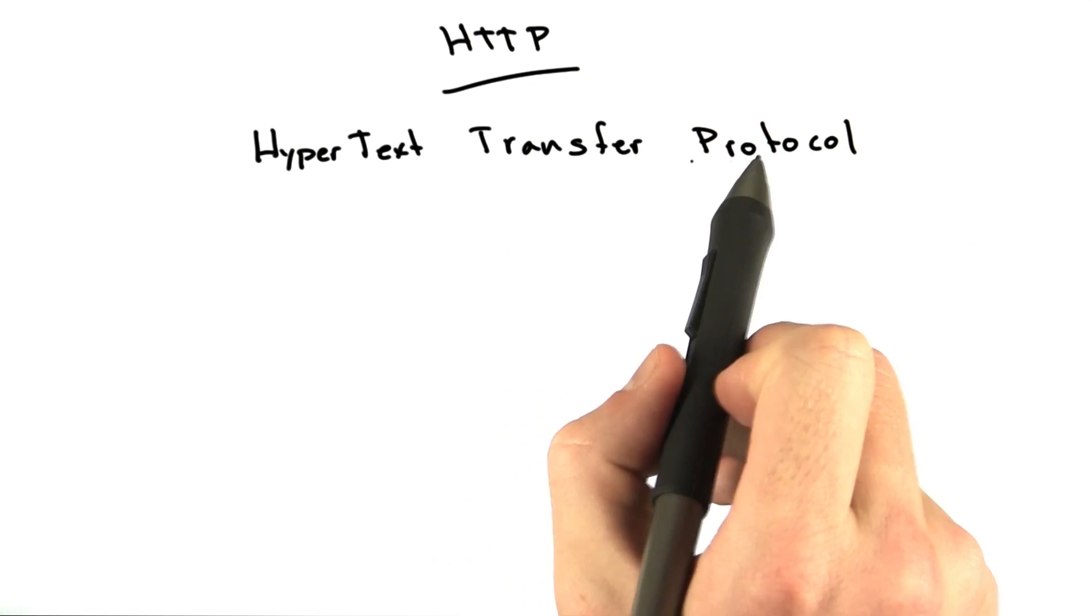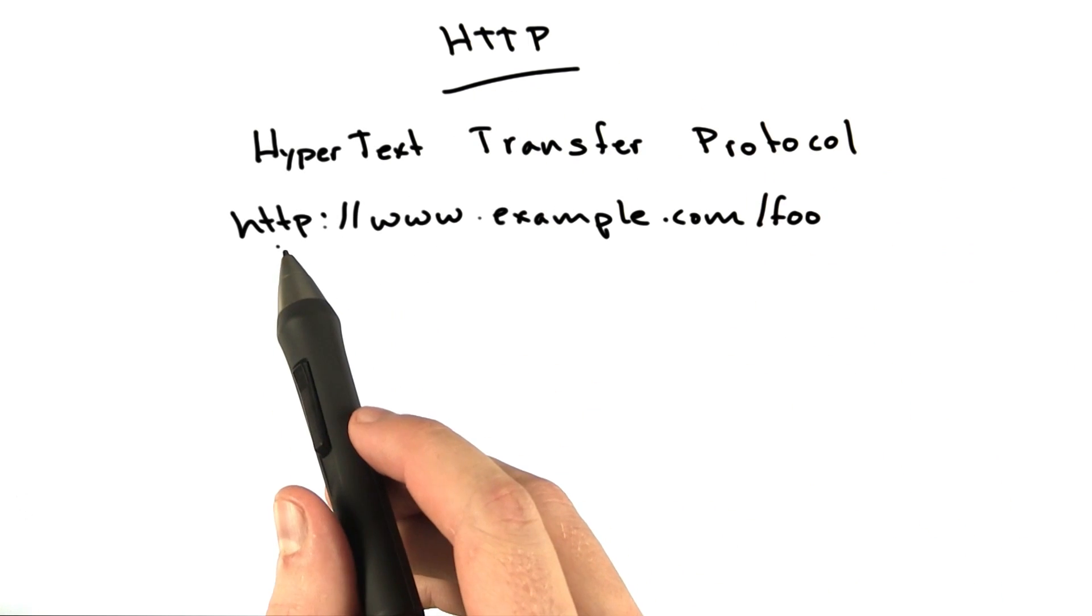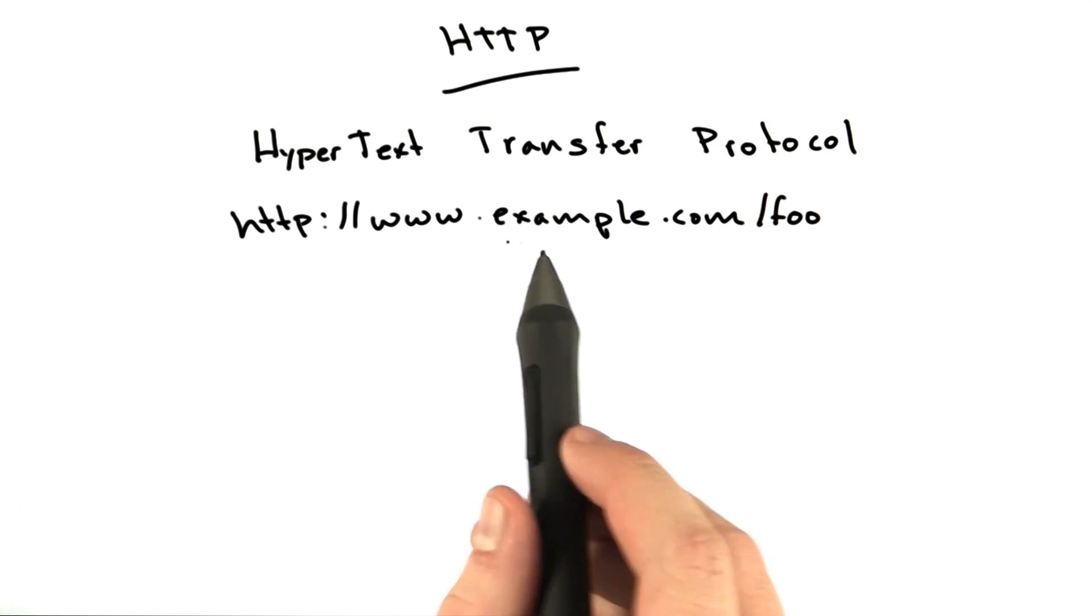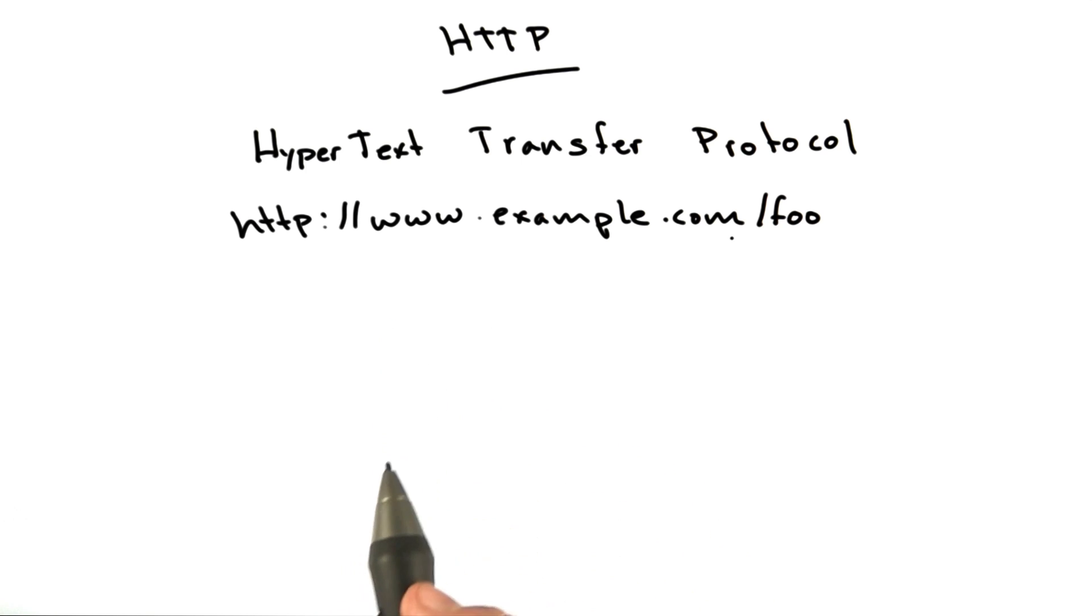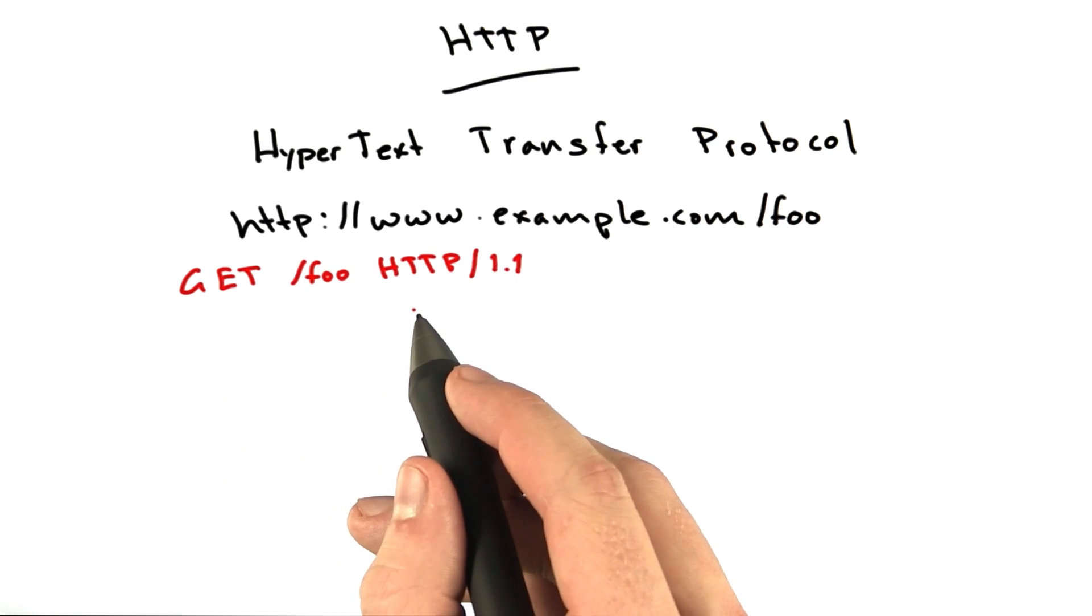HTTP stands for Hypertext Transfer Protocol. The request from your browser for the URL www.example.com/foo begins with a request line. It looks something like this. This is the request line.